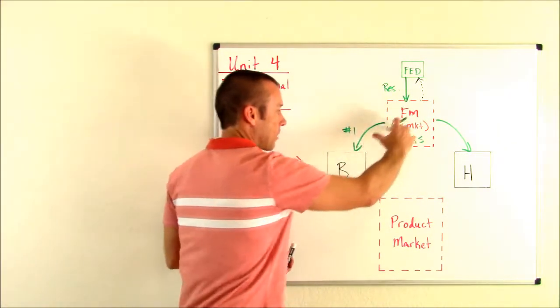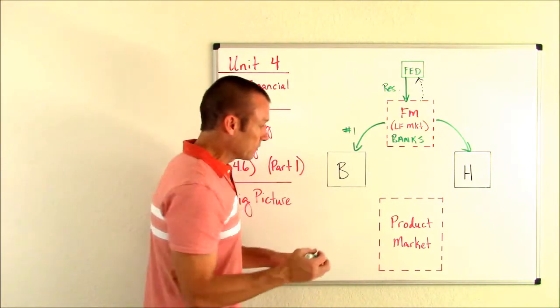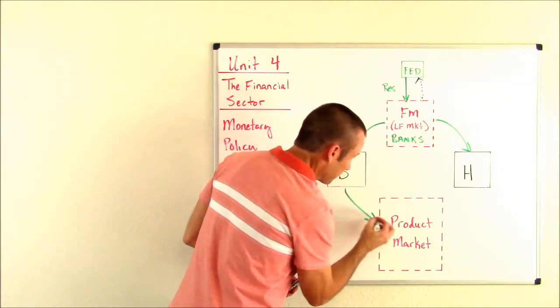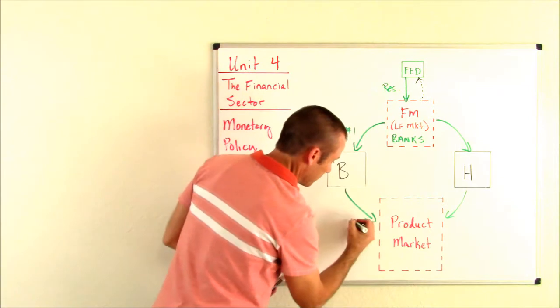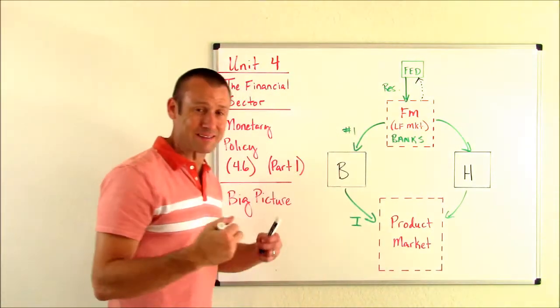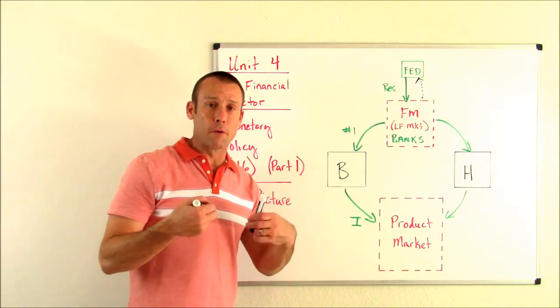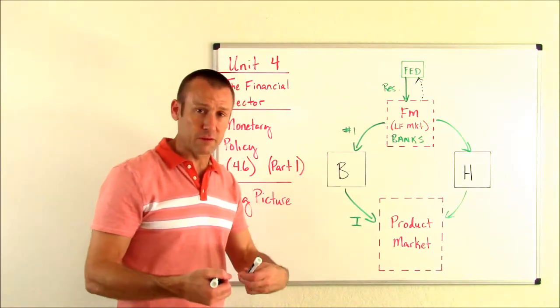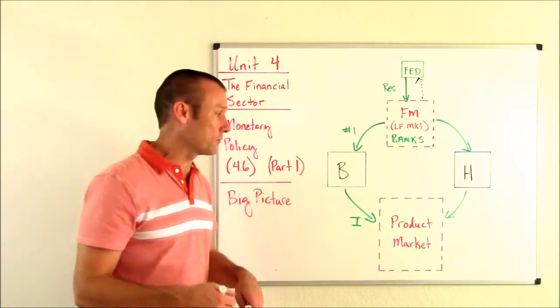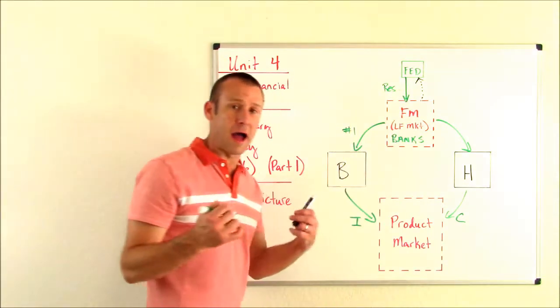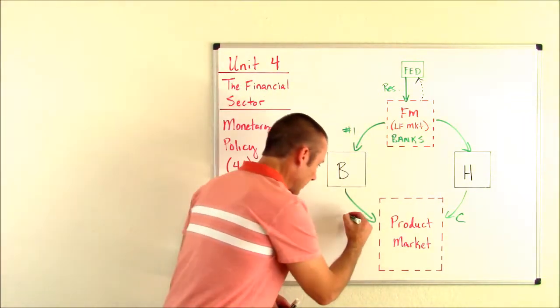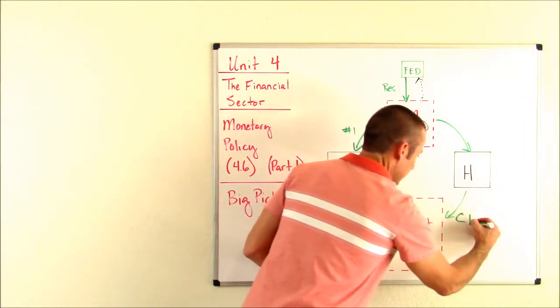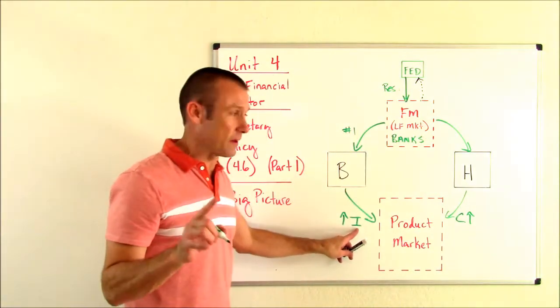So they borrow. What's the only reason we borrow? It is to spend money. This would be business investment. That I is investment. That's what we call spending done by businesses when businesses spend money on themselves. And this is consumption. That's what we call household spending. So they are trying to increase investment and increase consumption. That capital I, again, investment.